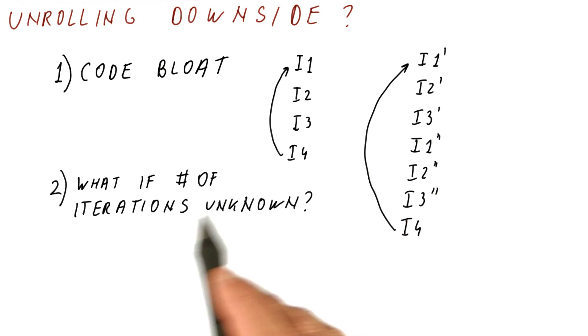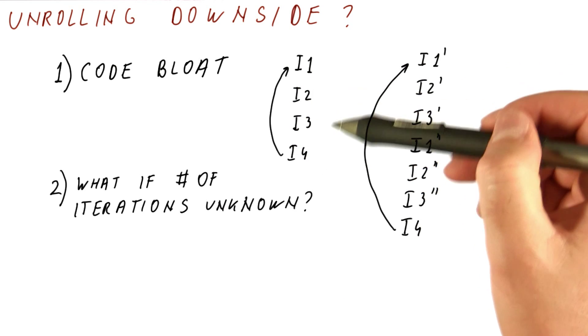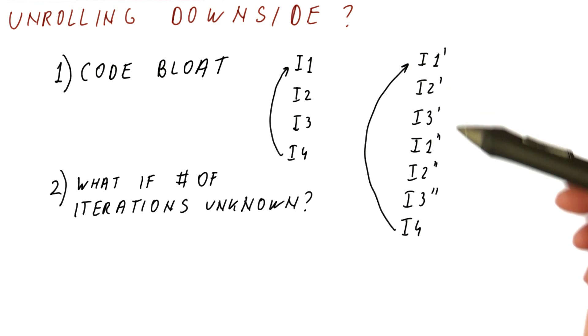Second, what if the number of iterations is unknown at the beginning? For example, this could be a while loop. In that case, here, we do one iteration at a time. Here, we're doing two iterations at a time.